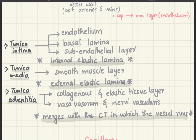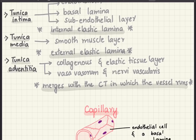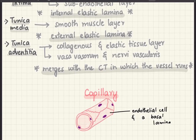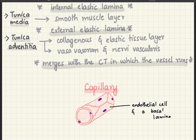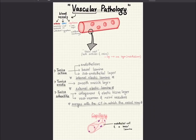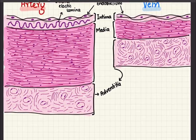We also have nervi vascularis — these are autonomic nerves which supply the blood vessels and are responsible for the contraction and relaxation of these vessels to maintain the diameter of the lumen. Lastly, the adventitia merges with the connective tissue in which the vessel runs. Here we have a diagram of a capillary showing endothelial cells — these are squamous endothelial cells.